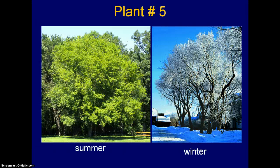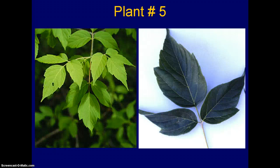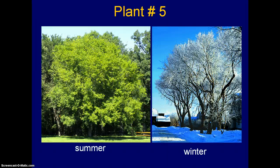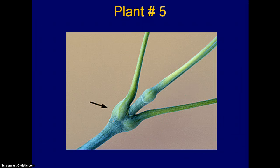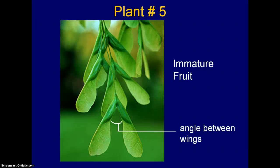Plant number five, summer and winter shots again. A picture that shows the base of the leaf — this is the leaf petiole here, and here's the stem, showing the base of the leaf. Here's some detail on the leaves, and some detail on the fruit. Just to refresh: summer and winter, leaf arrangement, leaf information, leaf type, and fruit information.